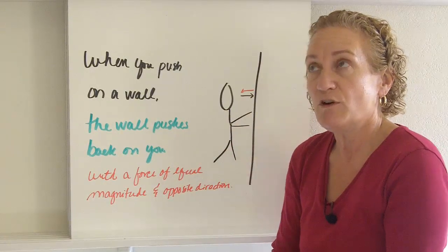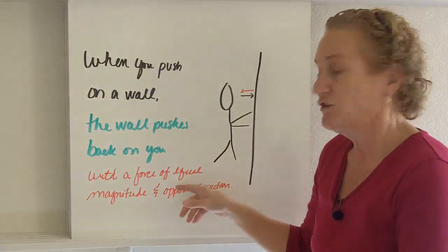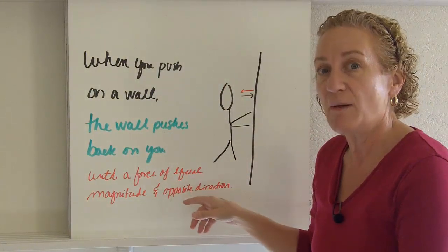If the floor pushed up with more force, she would actually be up in the air. She wouldn't be on the floor anymore, right? So equal in magnitude, same size, but opposite direction.